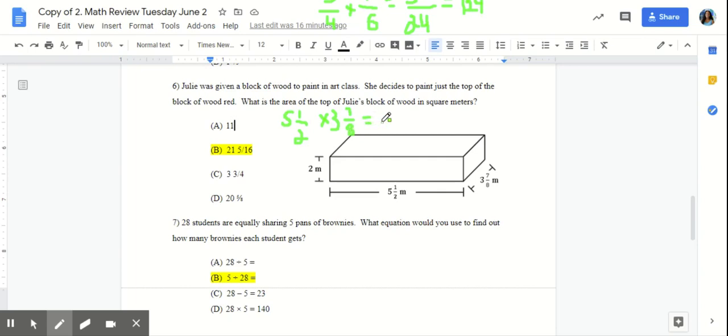Now if you solved correctly, your answer will be B, twenty-one and five-sixteenths. If you did not get this answer, go back and check your work. There are different ways you can solve this problem. One way is by setting up an area model. The second way is to turn both fractions into an improper fraction, multiply across, and then turn it back into a mixed number.